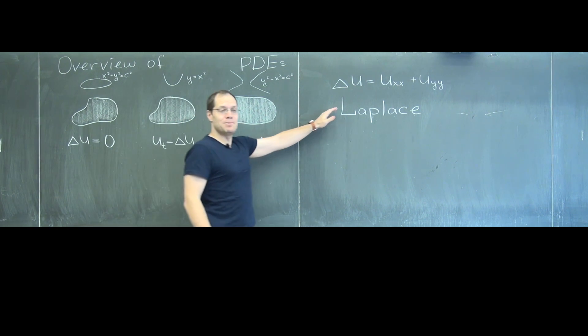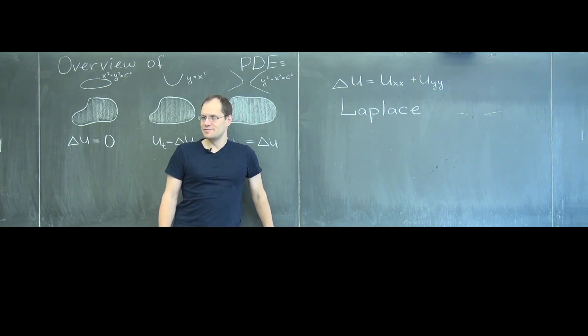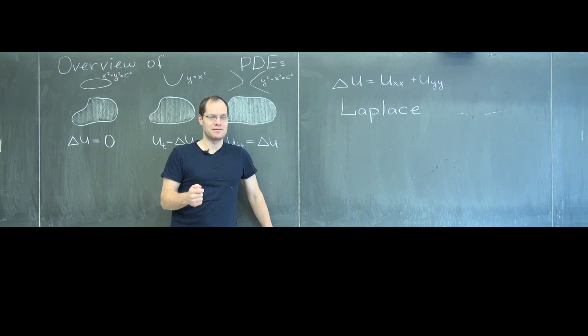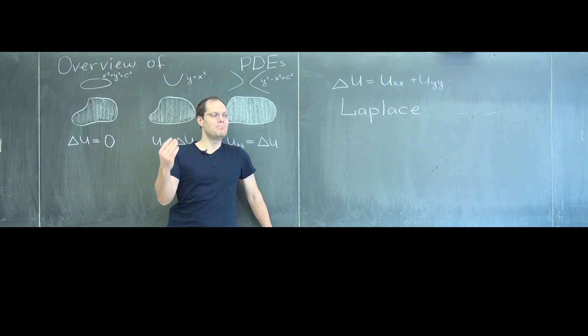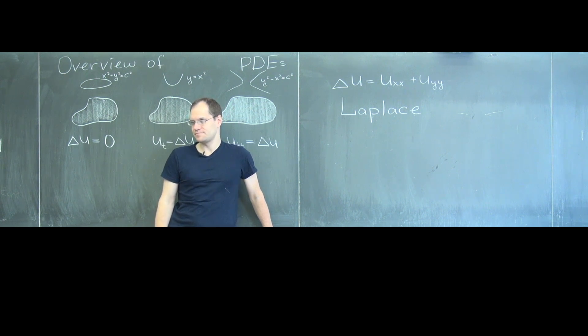This is called the Laplacian and we know its main property, or not so much main property but its invariant property, something that has nothing to do with coordinates. It is a measure: if you take a function of two variables and evaluate its Laplacian at a point, it gives you a measure of how different the value at that point is from the average of its neighbors.